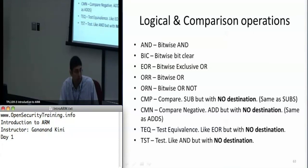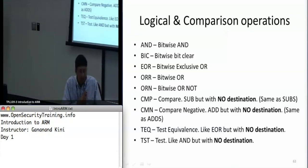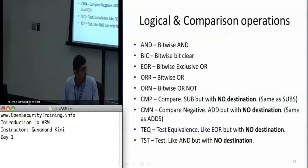All these logical operations update your flags — that's how the processor determines whether a logical operation was true or false. CMP (compare) subtracts two values and updates the appropriate flags. CMN (compare negative) adds two values and sets the flags — there is no destination register for either CMP or CMN. TEQ is similar to EOR: it exclusive ORs two register values and updates the flags for equality. TST performs a bitwise AND and is useful with conditional execution.